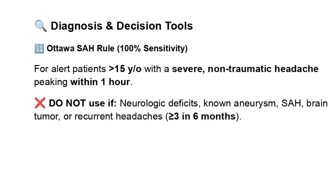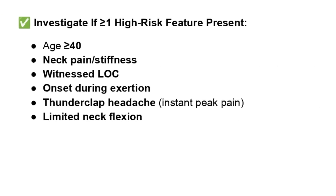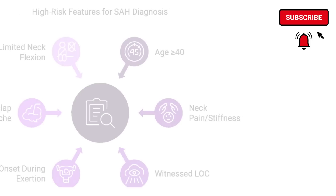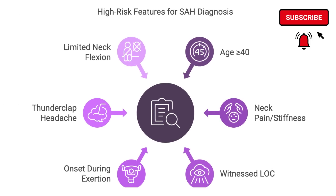If it seems okay to use the rule, there are six high-risk features: being 40 or older, having neck pain or stiffness, having passed out with a witness, the headache starting during exercise, it being a thunderclap headache, and having limited neck flexion on exam. The rule is super sensitive — so if none of those high-risk features are present, it's very unlikely to be a subarachnoid hemorrhage.